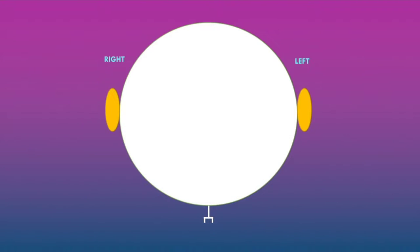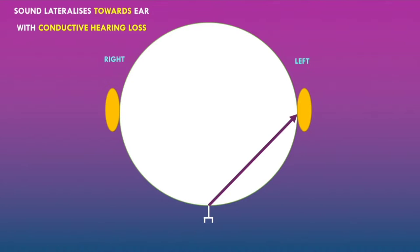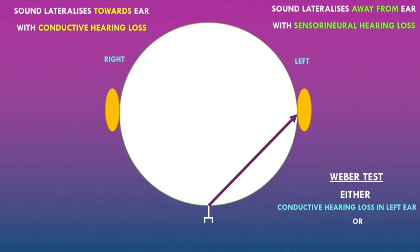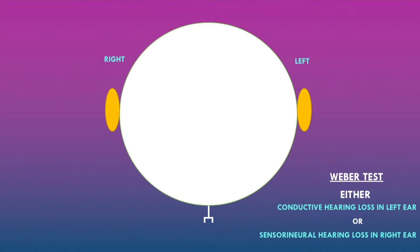Let's go to the schematic diagram to help understand why. In example one, in the Weber test there was lateralization to the left ear. The principles are that sound lateralizes towards the ear with conductive hearing loss and sound lateralizes away from the ear with sensorineural hearing loss. Because the sound has lateralized towards the left ear, this either indicates conductive hearing loss in the left ear or sensorineural hearing loss in the right ear.